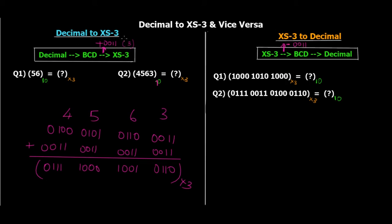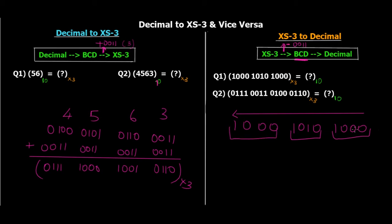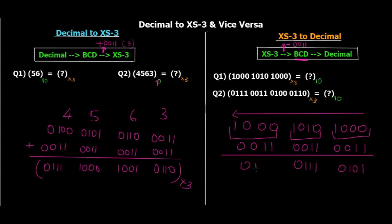For XS3 to decimal conversion, take the reverse process: subtract 0011 from each four-bit block to get the BCD code, then convert to decimal. Question: 1000 1010 1000. Make groups of four bits from right to left — three blocks. Subtract 0011 from each: 1000 minus 0011 = 0101 (5); 1010 minus 0011 = 0111 (7); 1000 minus 0011 = 0101 (5). Converting the BCD blocks to decimal: 0101=5, 0111=7, 0101=5. The final decimal answer is 575.